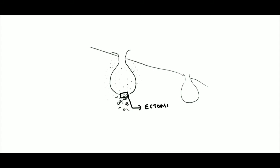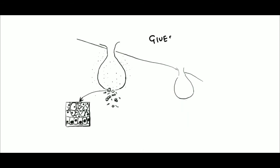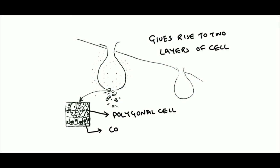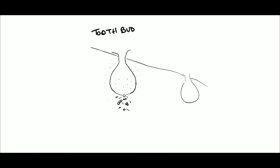As we can see, the ectomesenchyme condenses right beneath the tooth bud, giving rise to two layers of cells: polygonal cells in the inner layer and low columnar cells in the outer layer. The tooth bud is unique as it has differential proliferation, meaning different parts of the cells grow at different rates. At the center, proliferation is slower compared to the periphery where cell division is faster.